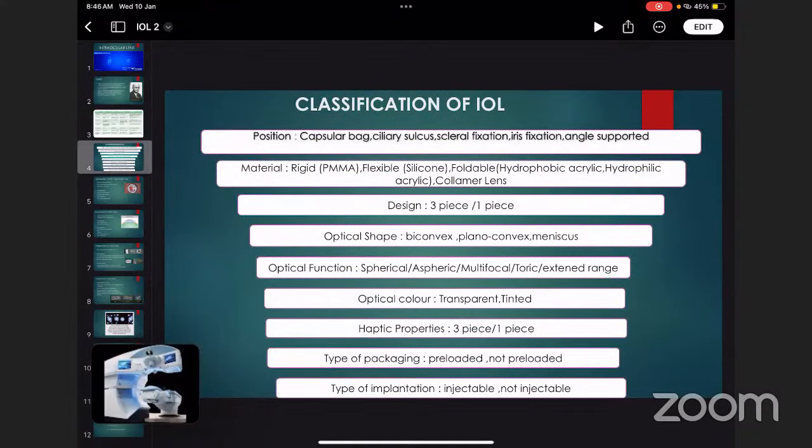Classification of intraocular lenses is based on multiple things, starting from position: capsular placement, ciliary sulcus, scleral fixation, iris fixation, angle supported. Material: rigid, flexible, foldable hydrophobic and hydrophilic acrylic, and collamer lens. Design: three-piece and one-piece. Optical shape: biconvex, plano-convex. Optical function: spherical, aspheric, multifocal, toric, and extended depth of focus. Optical color: transparent and tinted. With haptic properties and type of packaging: preloaded or not loaded.